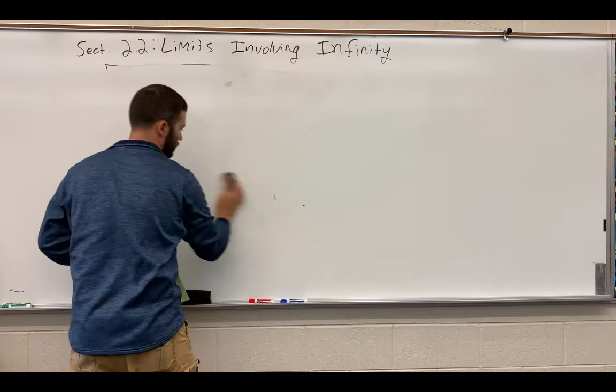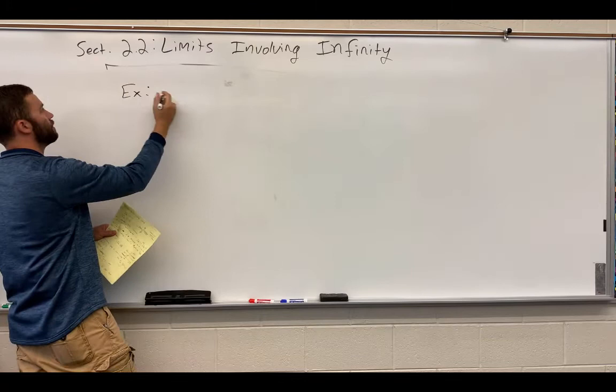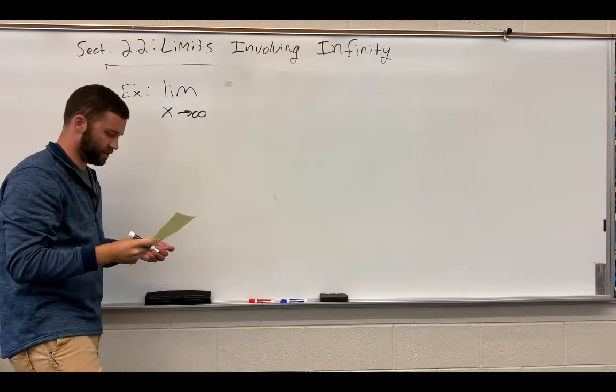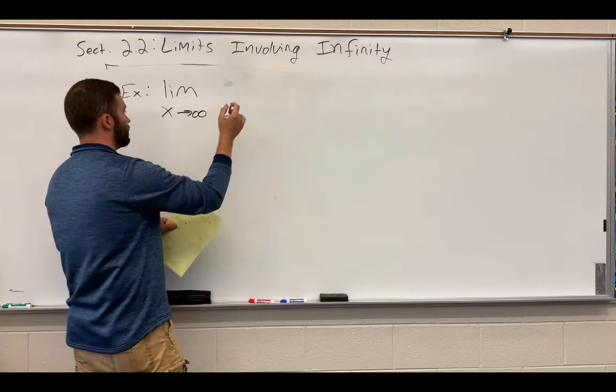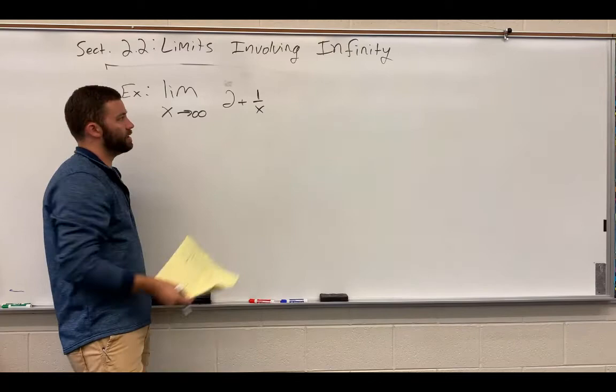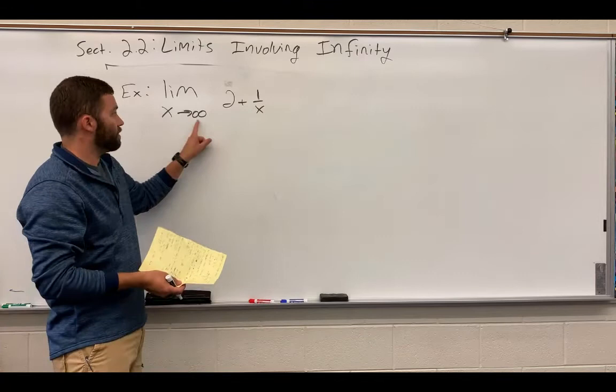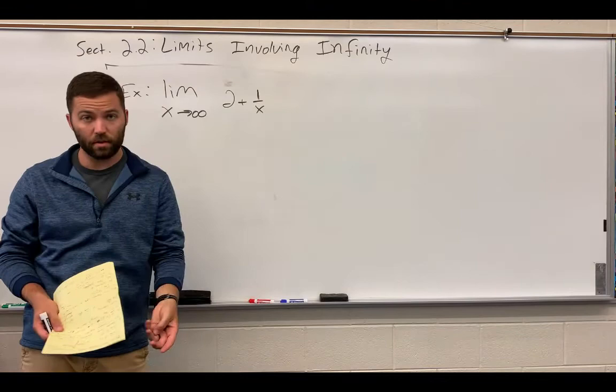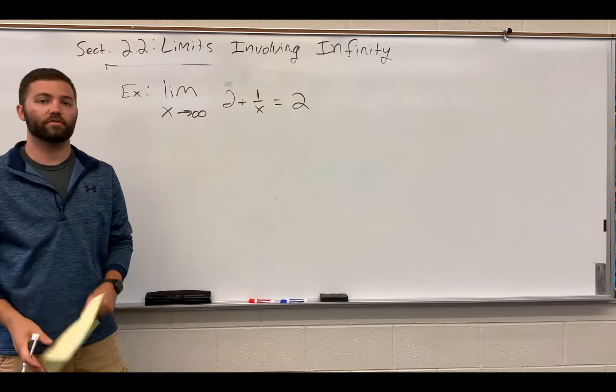I want to look at the limit as x approaches infinity of 2 plus 1 over x. This is actually not going to be the one direction asymptote that I just talked about, but we can think about this analytically. I'm going to put in very large numbers for x here. 2 plus 1 over very large numbers will essentially be 2 plus 0. So that will give us a limit of 2. You can check that with your graph or check with tables. I just wanted to throw that extra example in there.